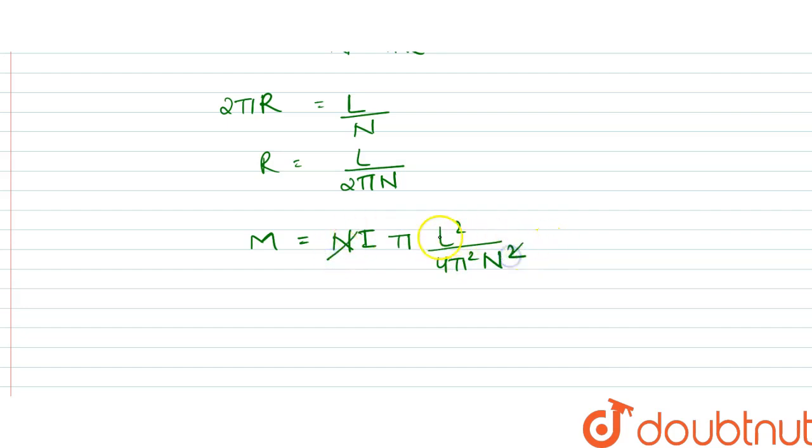So one N gets cancelled, one pi gets cancelled. So we have I L squared by 4 pi N.